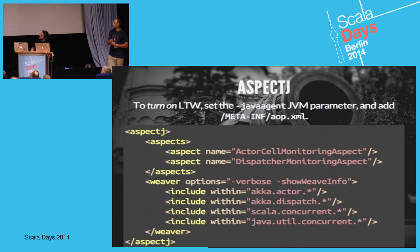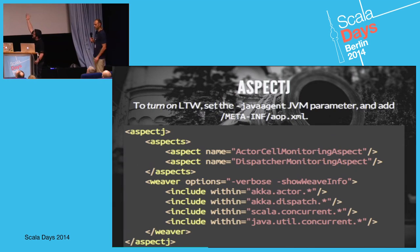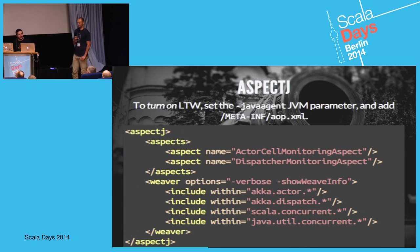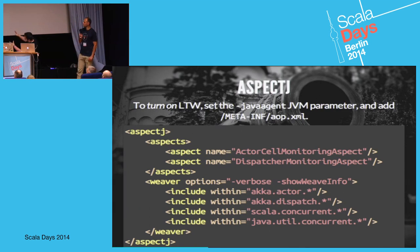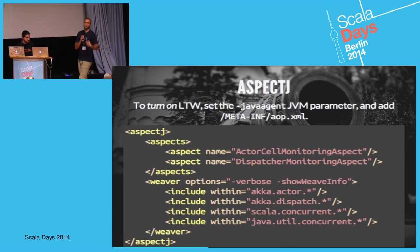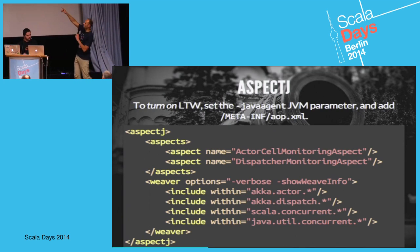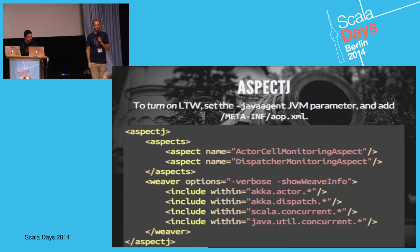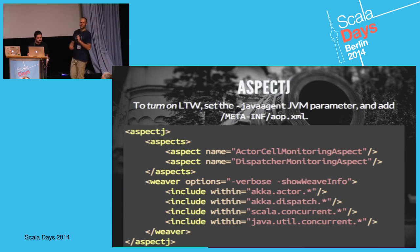To turn on load-time weaving, you add a Java agent argument to your run command and create an aop.xml file. The aop.xml tells the weaver where to unleash its monkey-patching magic - we restrict the scope to keep monkey-patching as minimal as possible. We don't ship the aop.xml in the monitor JARs; you create it in your app. You control which actors to monitor and can restrict class hierarchies, keeping startup time and potential damage minimal.